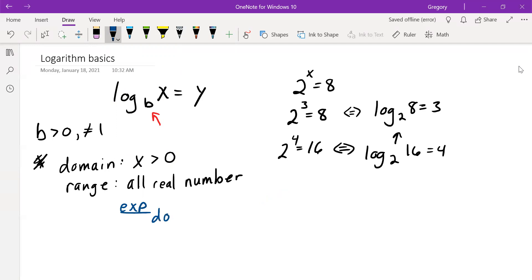The domain of an exponential is all reals. And the range of an exponential is y is greater than 0, as opposed to x greater than 0. So in true inverse fashion, they are switched. The domain of one is the range of the other, and vice versa.